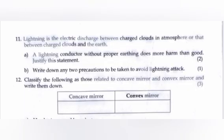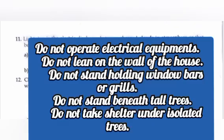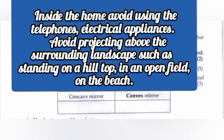B. Write down any two precautions to be taken to avoid lightning attack. Answer: Do not operate electrical equipments. Do not lean on the wall of the house. Do not stand holding window bars or grills. Do not stand beneath tall trees. Do not take shelter under isolated trees. Or write any relevant points.